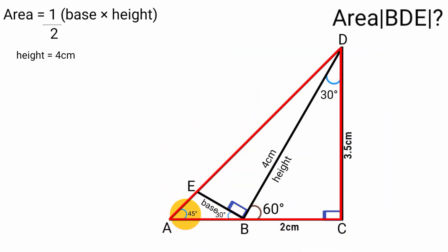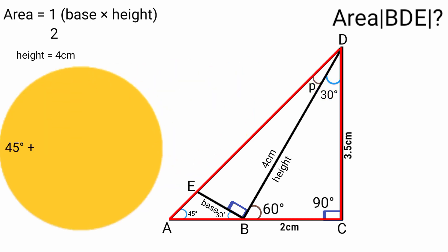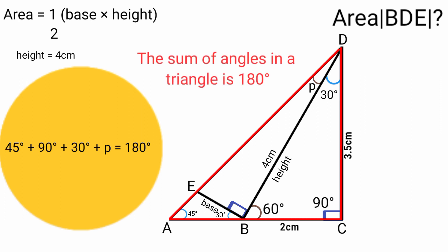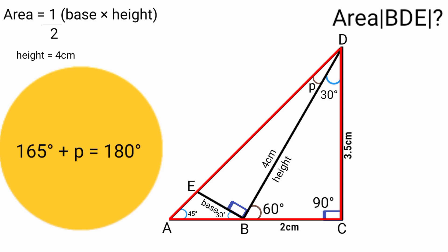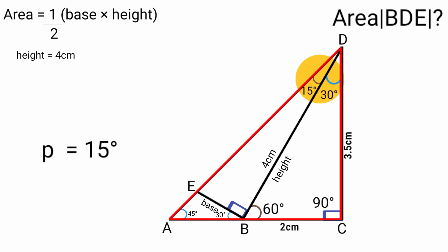From triangle BDE, we have angles 45 degrees, 90 degrees, and 30 degrees already identified. Labelling the unknown angle p, we form: 45 + 90 + 30 + p = 180 degrees. 45 + 90 + 30 = 165, so 165 + p = 180. Subtracting 165 from both sides gives p = 15 degrees.